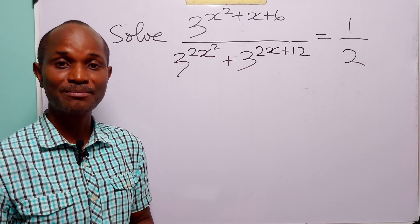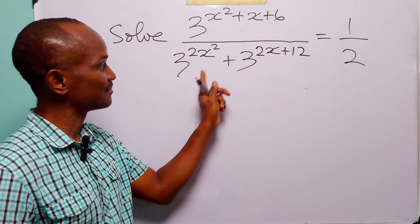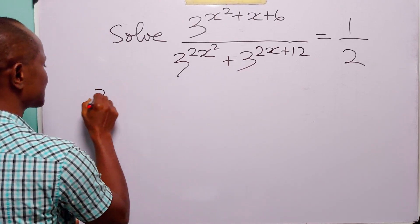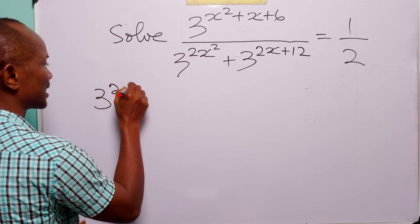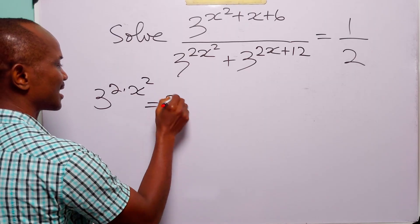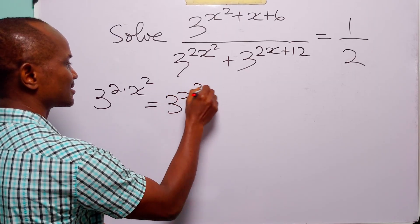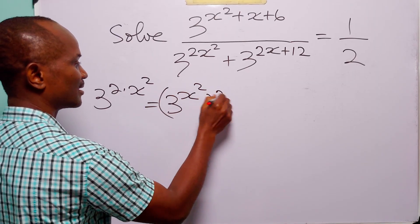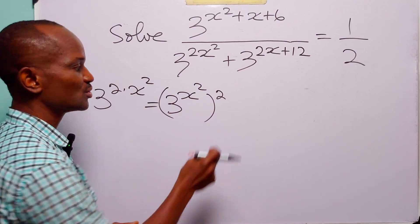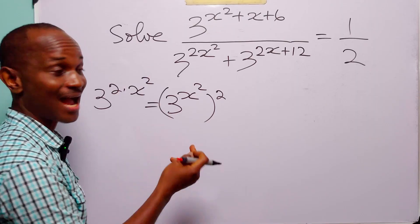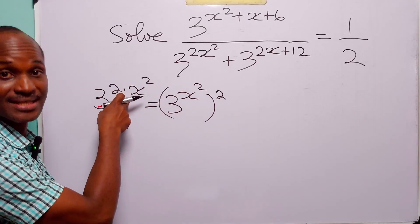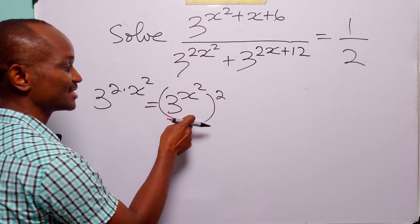To solve this problem, we are going to start by looking at these two terms in the denominator. Now, of course, you know that this can be written as 3 to the power 2 times x squared. And this can also be written as 3 to the power x squared, squared. Because to remove this bracket, all we do is multiply these two powers. And 2 times x squared is equal to 2x squared.